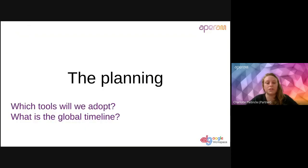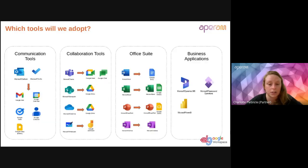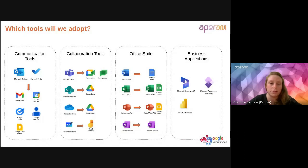About the planning — which tools will we adopt and what is the global timeline? So on the screen you have the tools you're currently using and the tools you will be using in the coming weeks and months. Starting with communication tools: today you're using Microsoft Outlook and Microsoft To-Do lists. In the future, you will be using Gmail, Google Calendar, Google Tasks, Google Contacts, and Google Keep for notes.